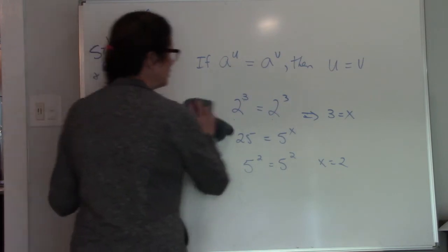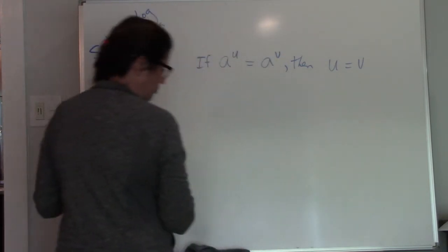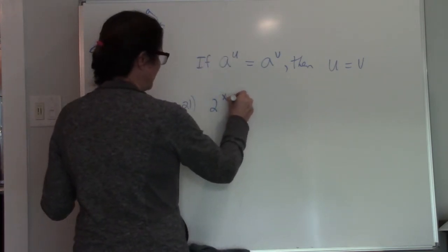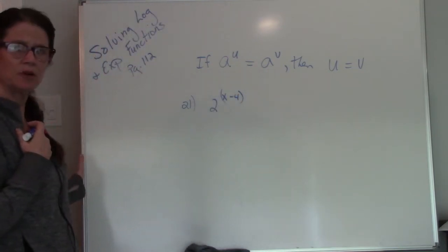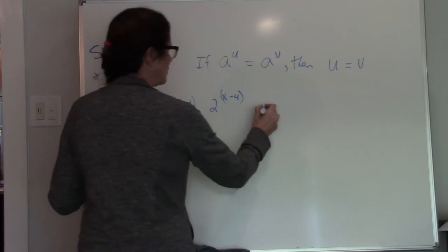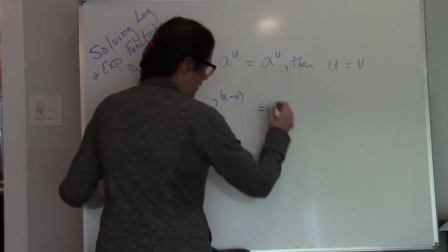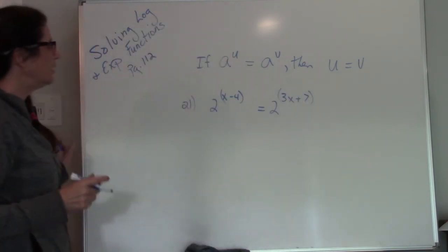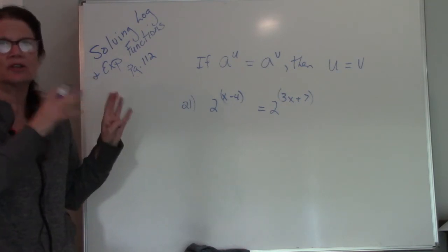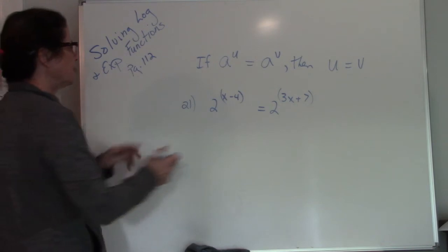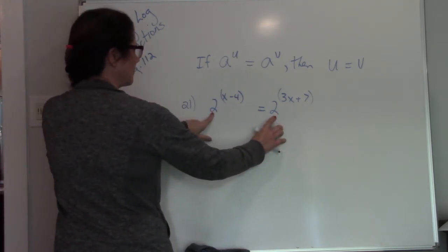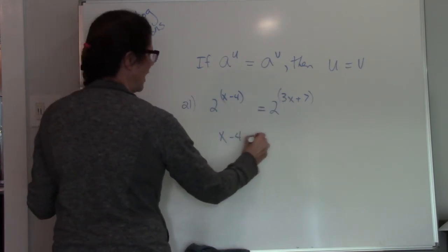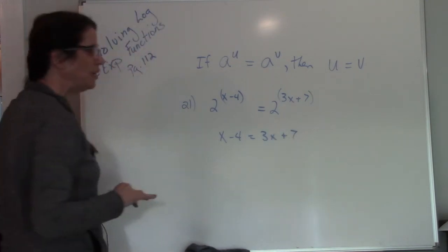So let's take a look at some of the problems. This is on page 112, number 21. So number 21 says 2 raised to the x minus 4, and I'm going to put it in parentheses so you can see that the x minus 4 is in the exponent position, equals 2 raised to the 3x plus 7. So since these bases are the same, based on this principle, the bases are the same, which tells me my exponents have to be the same thing. They have to equal each other.